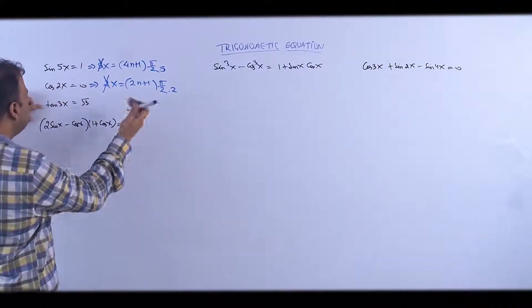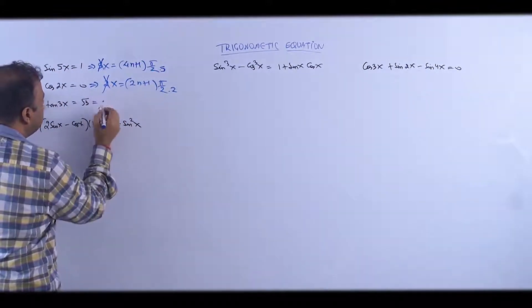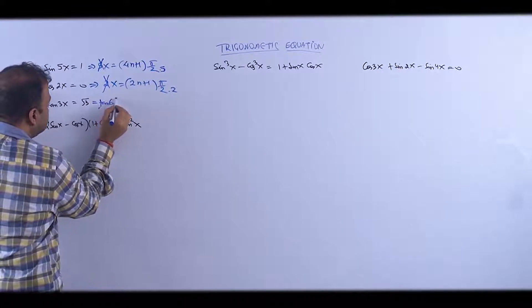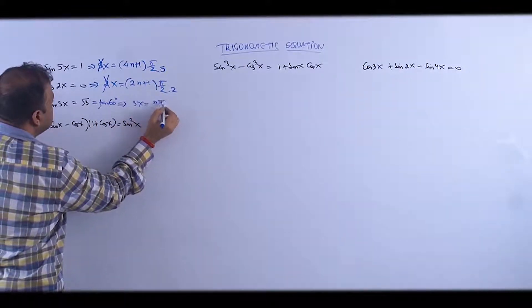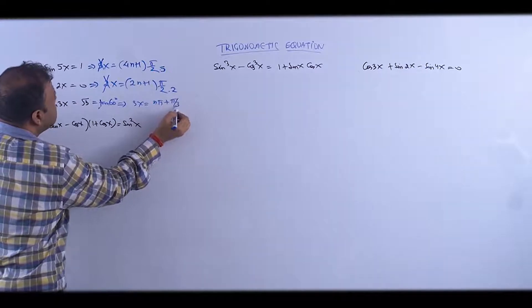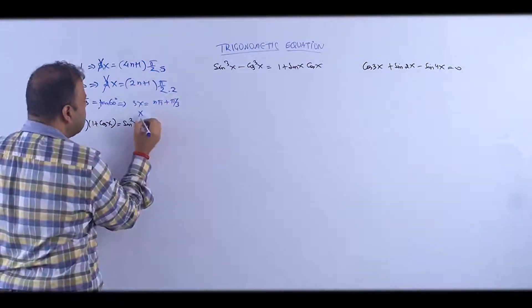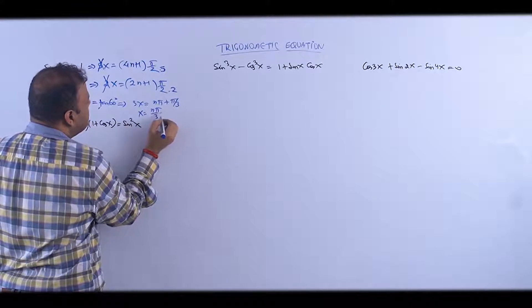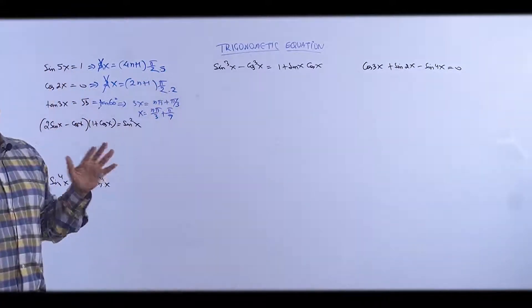tan(3x) = √3, meaning tan(60°). That gives 3x = nπ + π/3. So x will be nπ/3 + π/9. Simple.